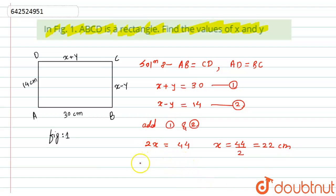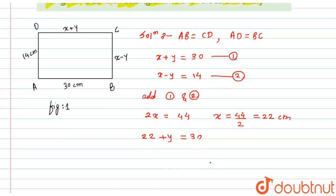Now this value of x I will put in equation number one, so I will get 22 plus y equals 30. Now I will take 22 to that side, so y will become y equals 30 minus 22, which will be equal to 8 centimeter.